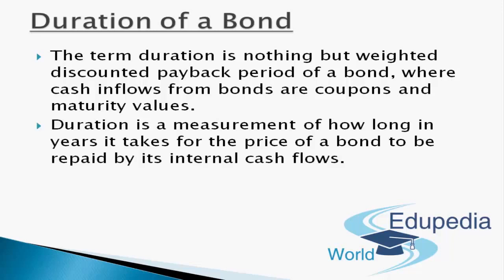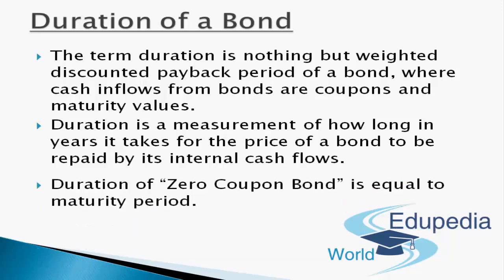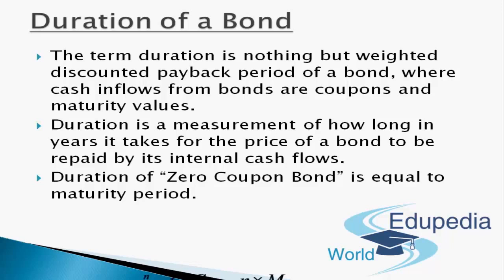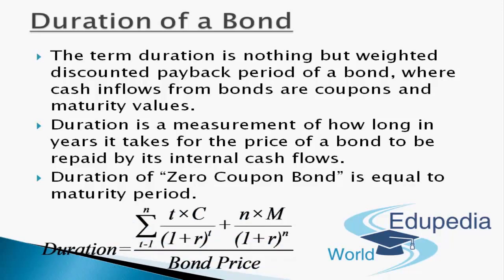Duration was a concept formulated by Macaulay and is known as Macaulay Duration. To reiterate: duration measures in years how long it takes for the bond's price to be repaid by its internal cash flows. In the formula, T stands for time period (weighted years), C for coupon cash flows receivable each year, N for number of cash flows (maturity period), and R is the required yield — all divided by the bond price. Duration accounts for the entire pattern of both size and timing of the bond's cash flows over its life.